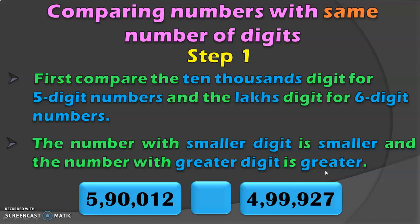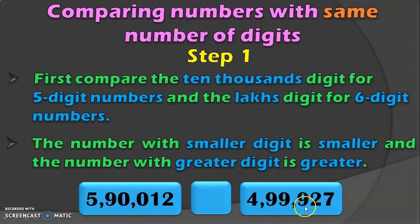Let us see this with an example of a 6 digit number. The place values are 1s, 10s, 100s, 1000, 10,000 and lakh. For a 6 digit number, look at the lakhs place value first. Here you have 5 in one number and 4 in 4,99,927. We know that 5 is greater than 4, so we can conclude 5,90,012 is greater than 4,99,927.